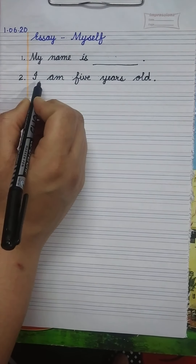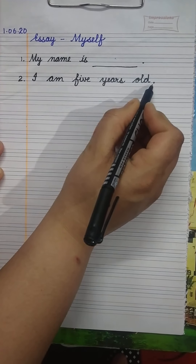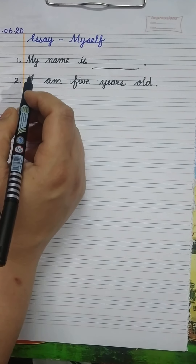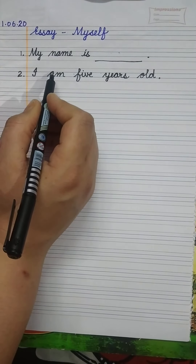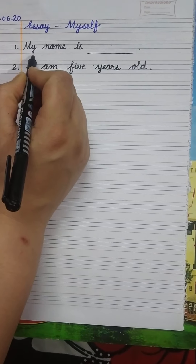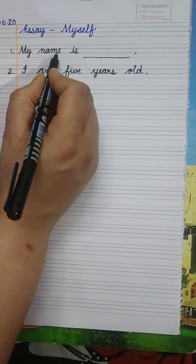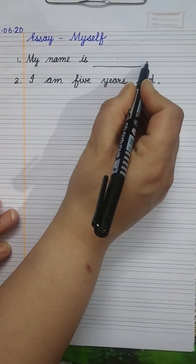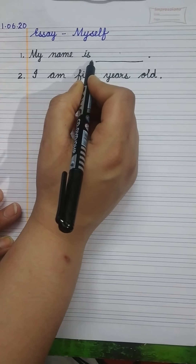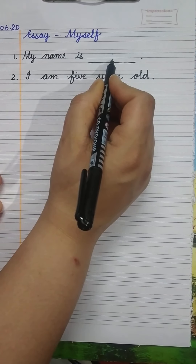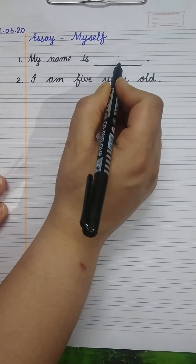Only two lines: first is 'My name is' — full stop — and second is 'I am 5 years old' — full stop. I am repeating these lines, listen carefully. Number one: My name is — write your name here — full stop. For example, my name is Jyoti. You speak your name only, don't speak any other name.